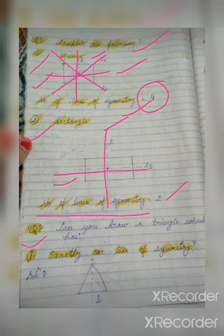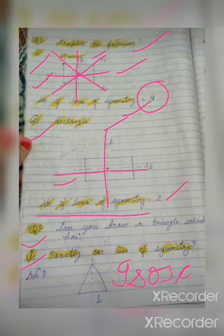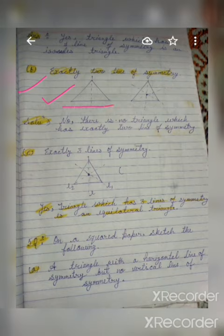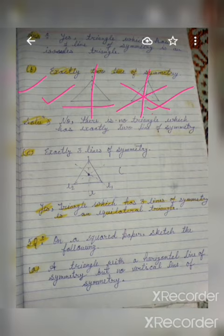Question Number 4: Can you draw a triangle which has exactly one line of symmetry? For part B — exactly two lines of symmetry — there is no triangle which has exactly two lines of symmetry. An isosceles triangle has one line of symmetry, an equilateral triangle has three, and a scalene triangle has no line of symmetry. So no triangle has exactly two lines of symmetry.